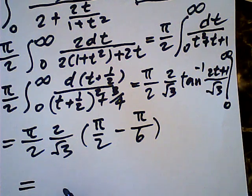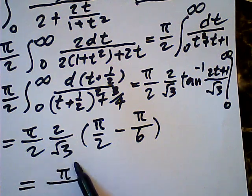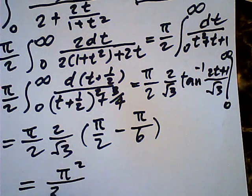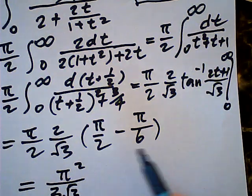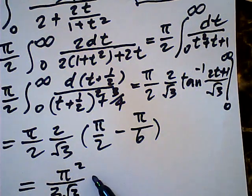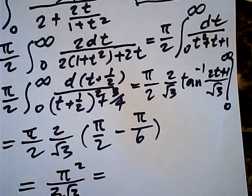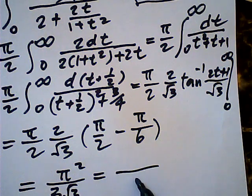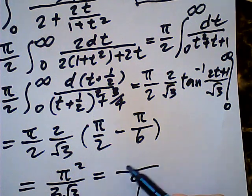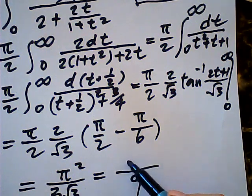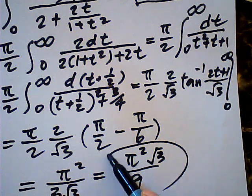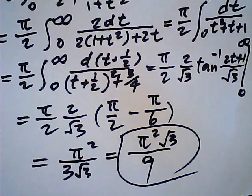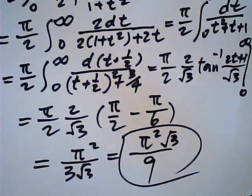And if you don't like irrational number in the denominator, we change it times the root three, right? Root three, pi square root three over nine. Okay, that is a nice answer for this integral.